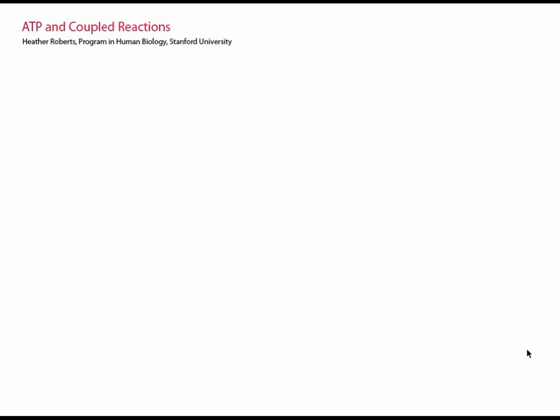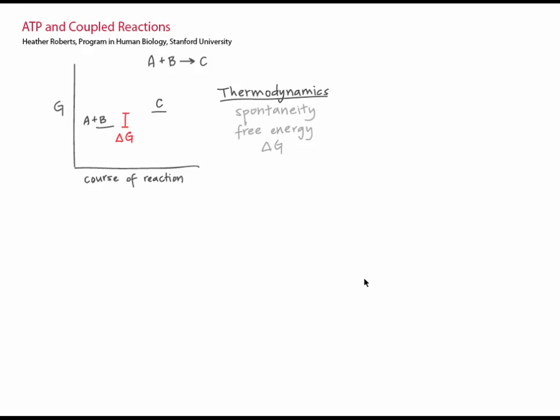In the enzyme catalyzed reactions tutorial, we talked about the thermodynamics and kinetics of chemical processes. We saw that Gibbs free energy, or G, tells us about the stability of the starting materials and products. The change in free energy, delta G, is used to determine the spontaneity of a reaction, whether the reaction would, if possible, proceed in a given direction.